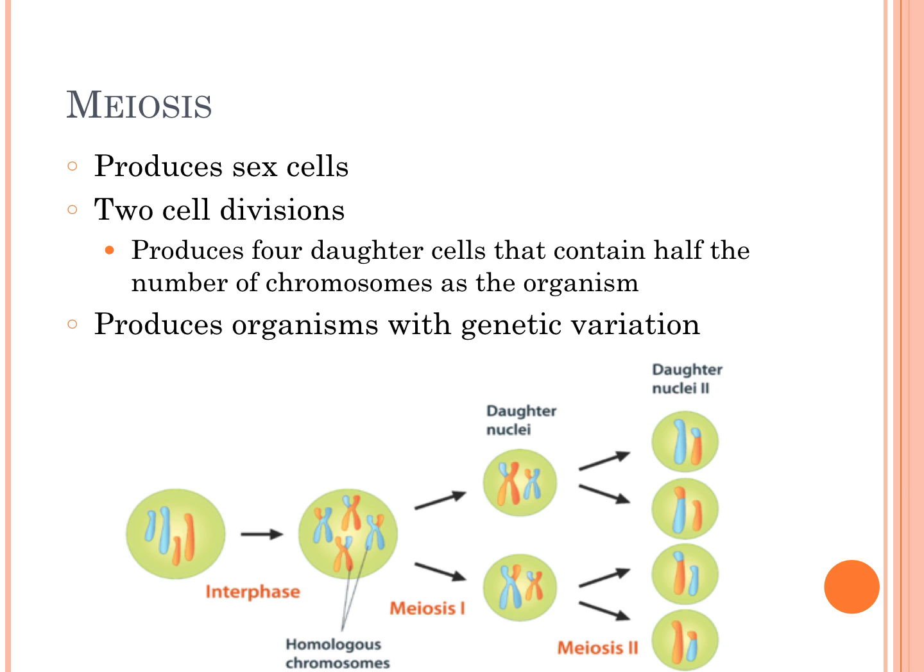Meiosis produces sex cells and goes through a process of two cell divisions. Those four daughter cells at the end contain half the number of chromosomes as the original organism. This is what produces genetic diversity — a very important term. Sexual reproduction is for genetic diversity.